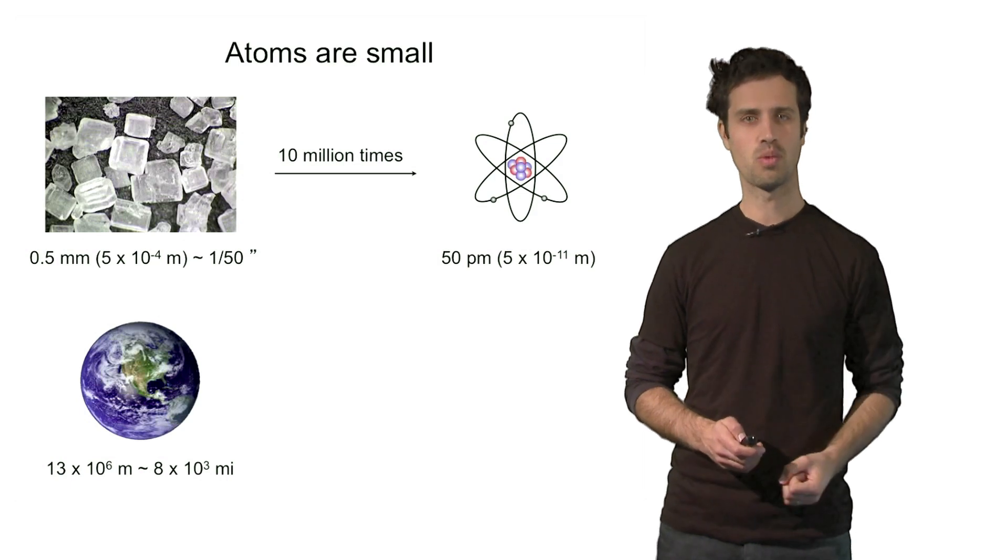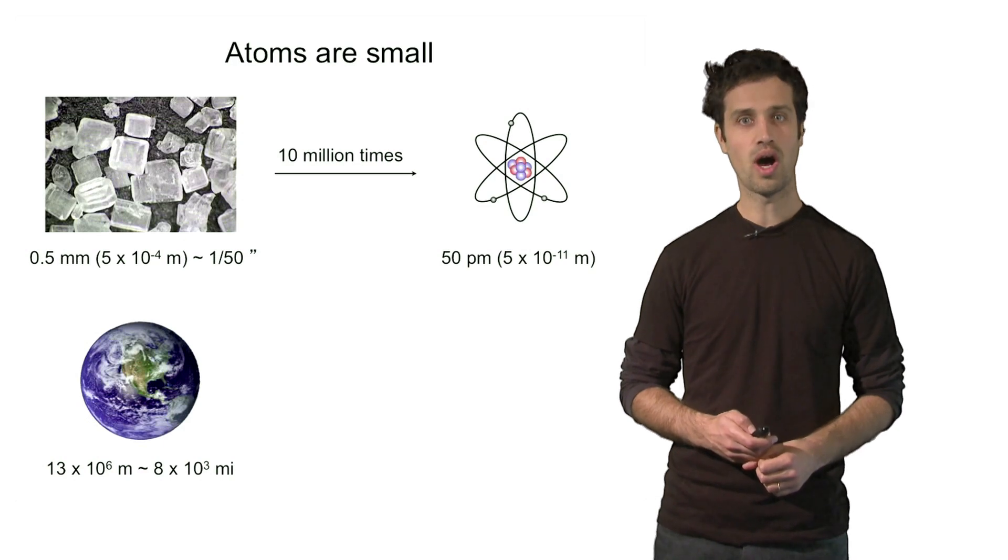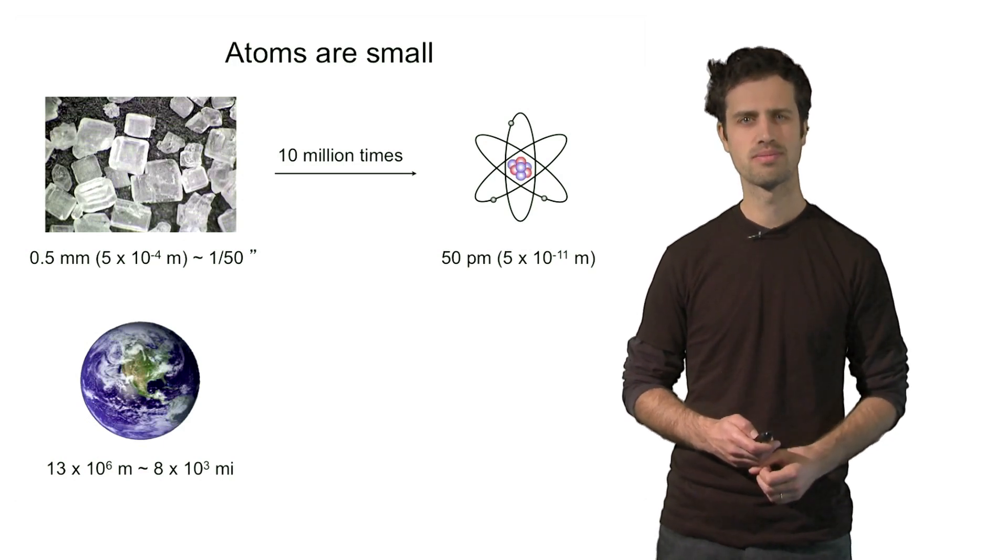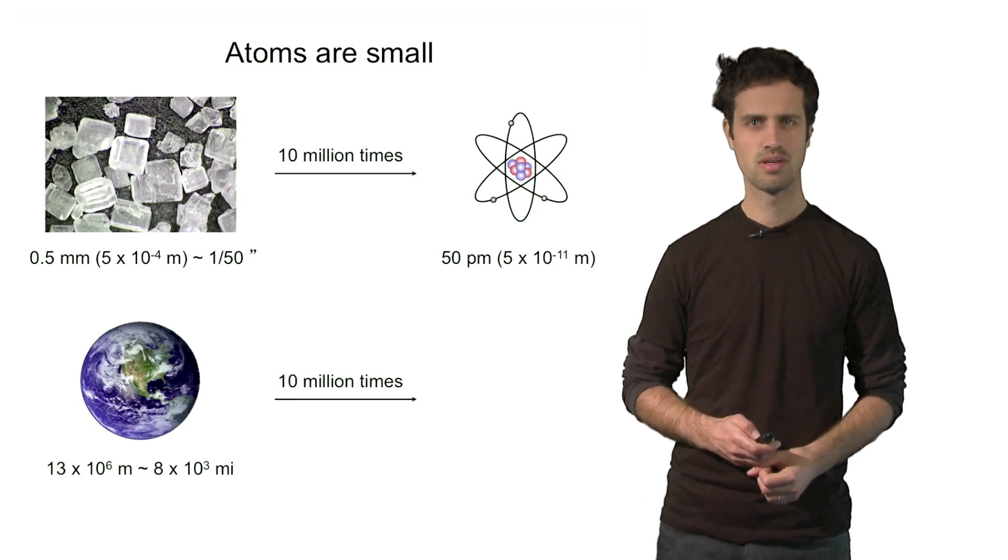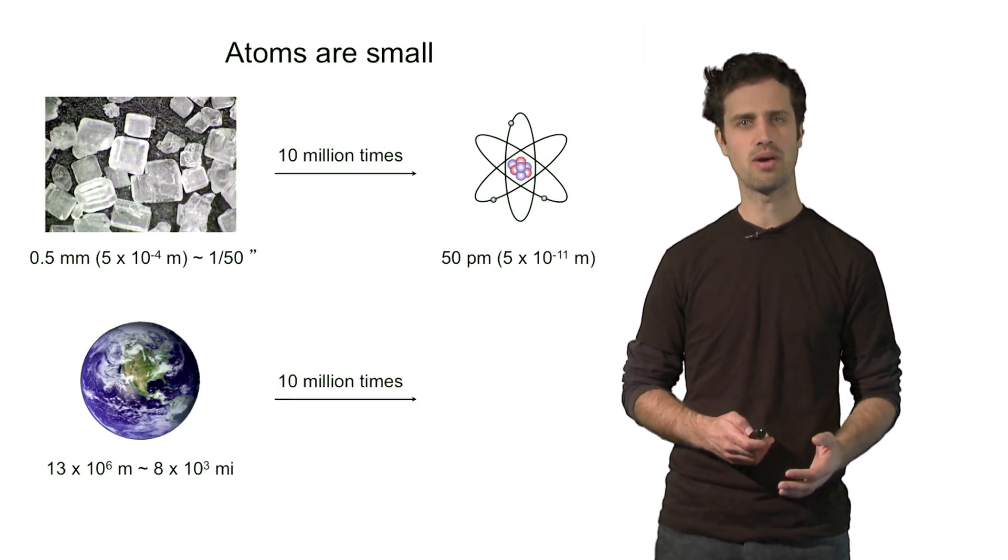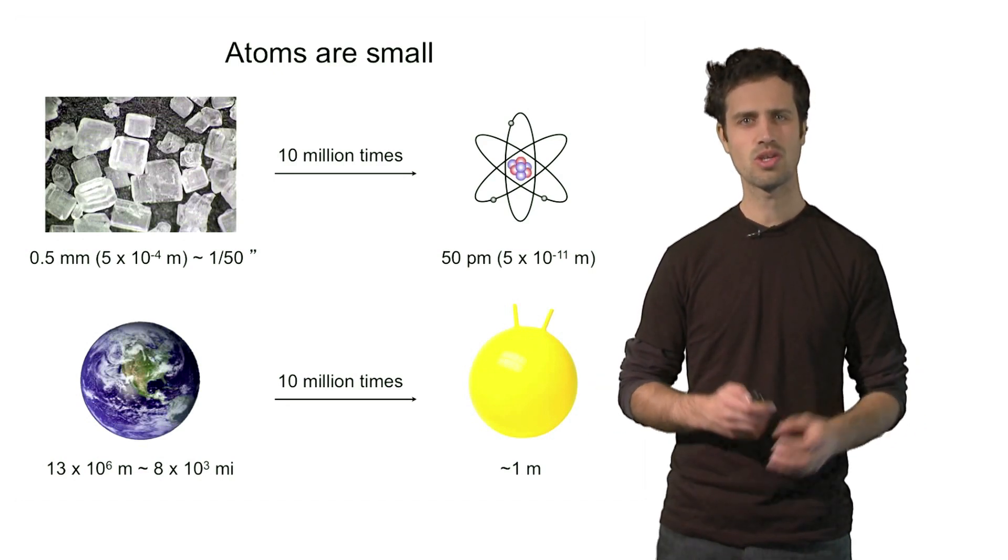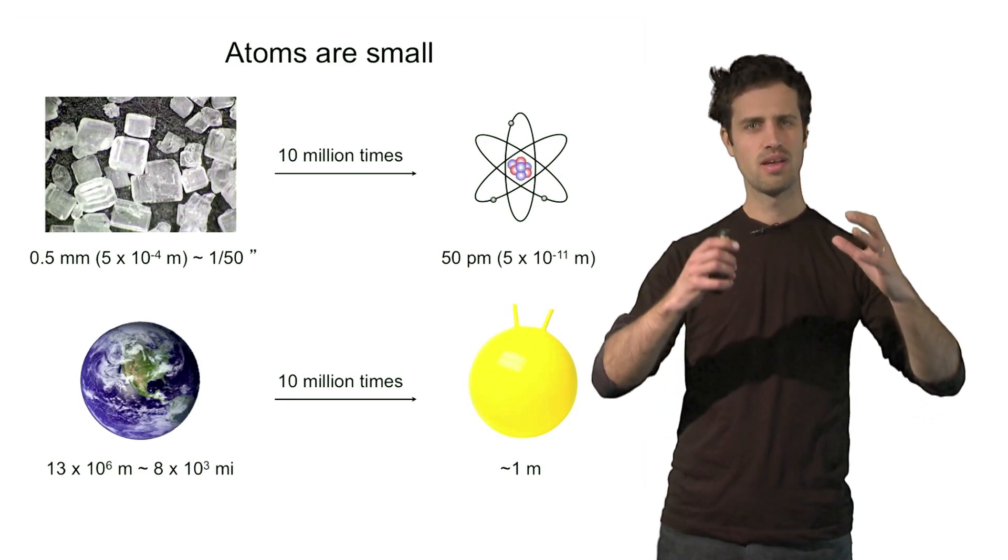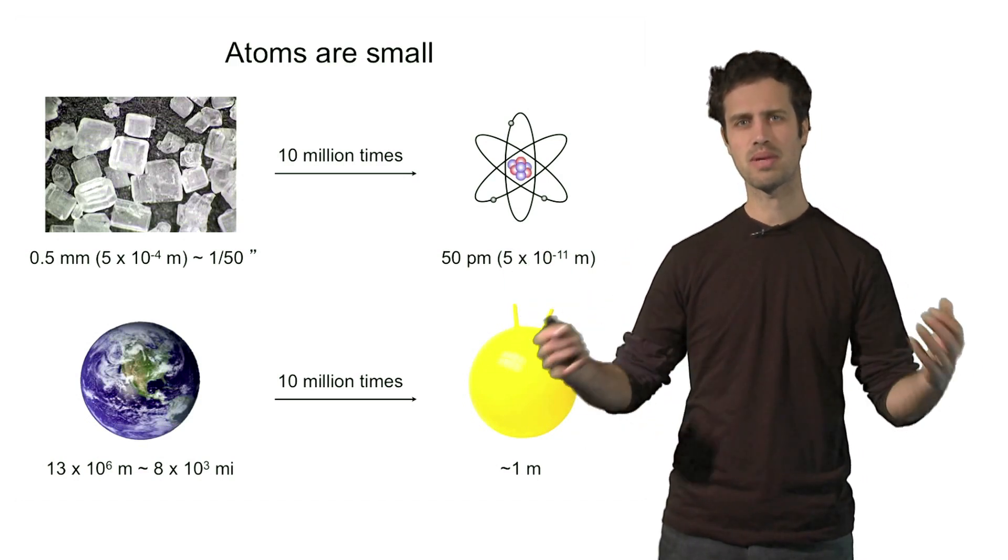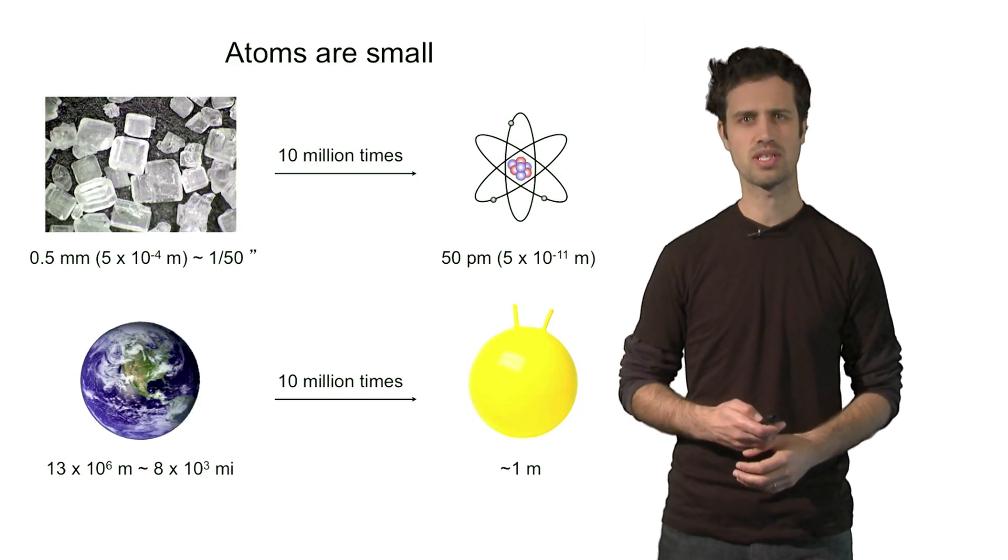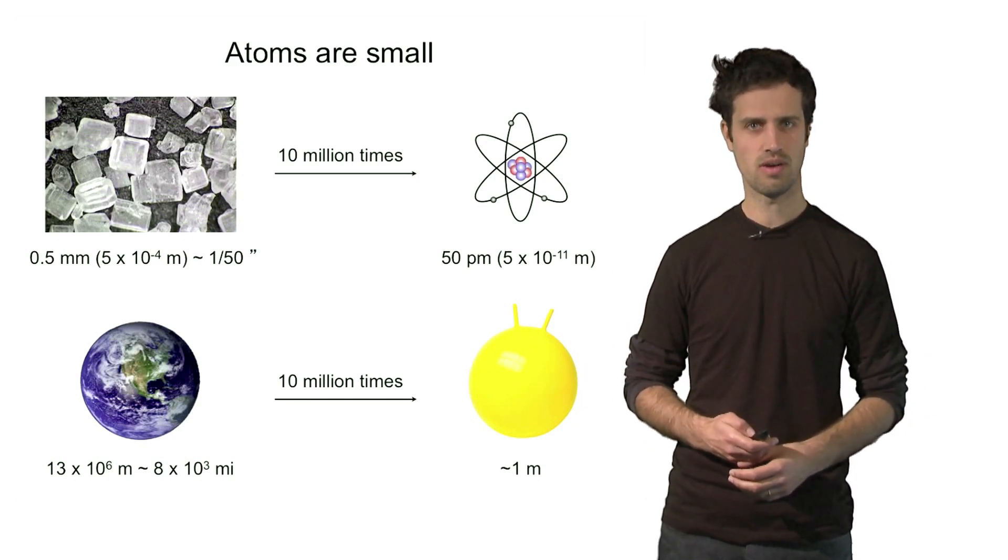So let's look at another example. Let's look at planet Earth once again. Planet Earth is about 13 million meters wide, or 8,000 miles. If you shrink planet Earth by 10 million times, then you end up with an object that is about the size of a skippy ball, or about one meter. So leaping from the size of planet Earth to the size of a skippy ball seems like a big step, but it's not an inconceivable step. It is conceivable. We can comprehend the magnitude of this leap.